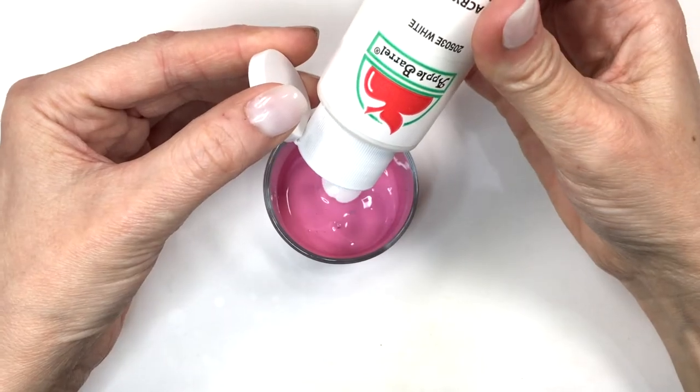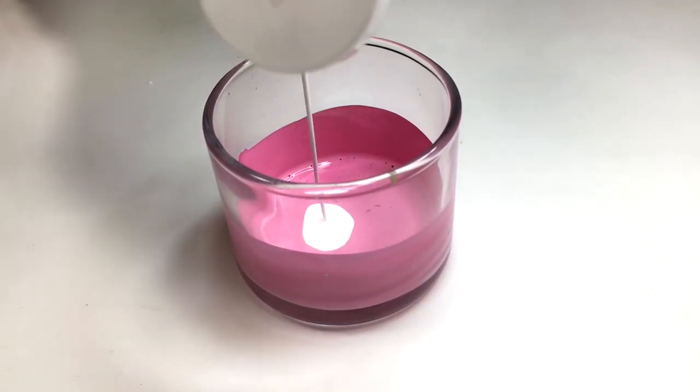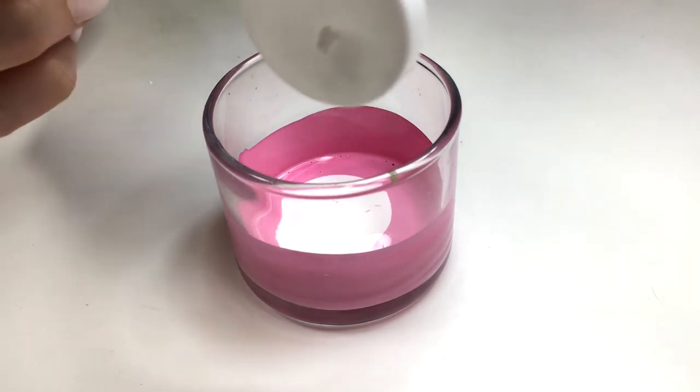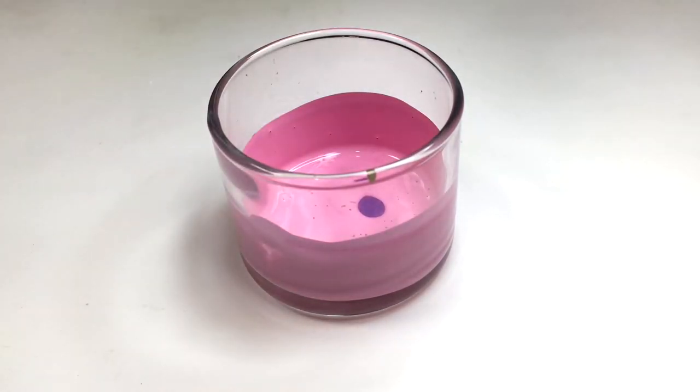If you want to make this lighter, just add more white. If you want it to be more pigmented, just add less white. What I did is as I was mixing, I painted a piece of paper because it looks different once it's dry.